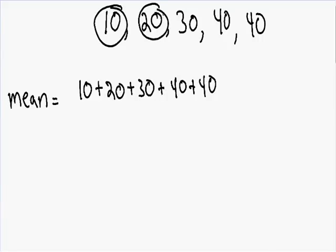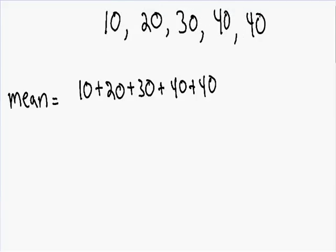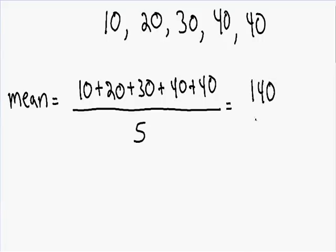We have 5 numbers in our data set, so we need to divide by 5. Adding them up: 10 plus 20 is 30, plus 30 is 60, plus 40 is 100, plus 40 is 140. So in our numerator we have 140, and in our denominator we have 5. 140 divided by 5 is equal to 28. So our mean of this data set is equal to 28.